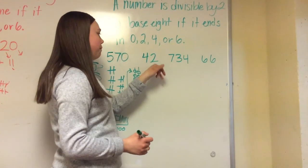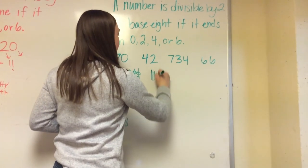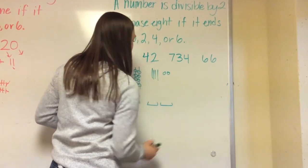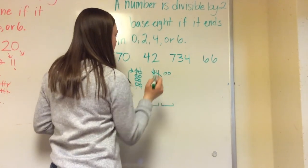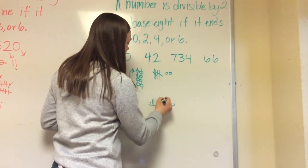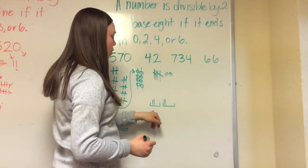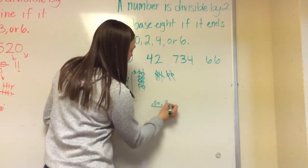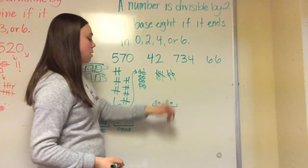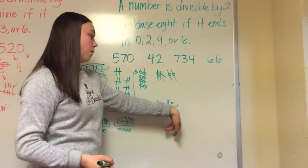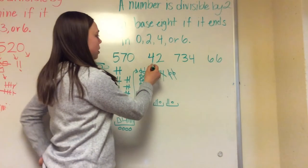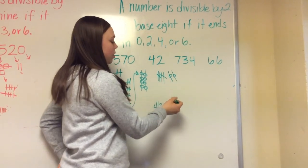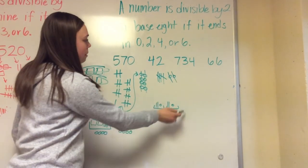Now if we look at 42 — it ends in two — we have four rods and two singles. Dividing into two groups, we have a group of two rods here and a group of two here, so each group is going to get two rods. Then we have two singles left over, so each group gets one single. Even if this had been an odd number and we would have had to regroup, we still would have had eight singles, which equals out into our groups.